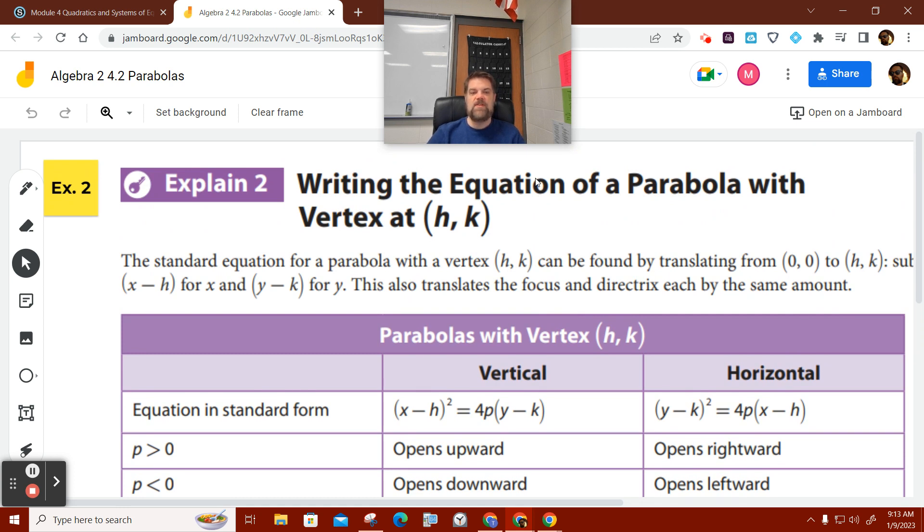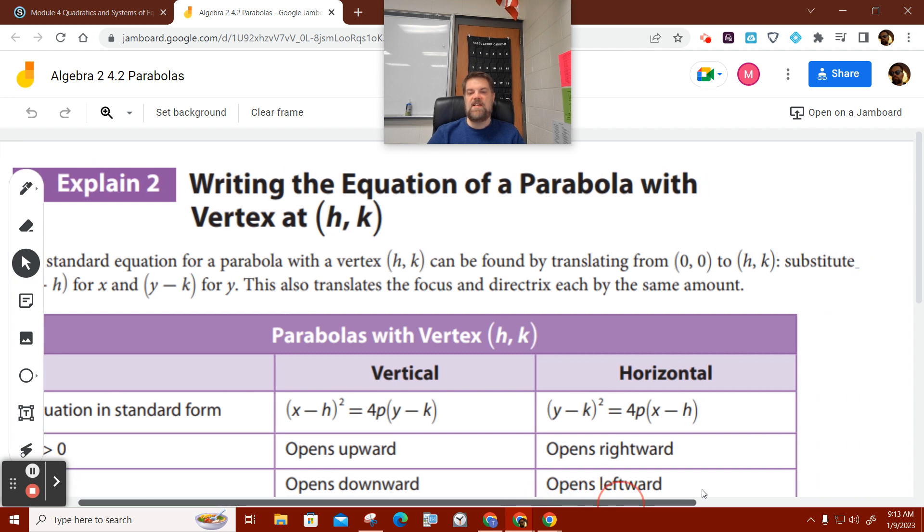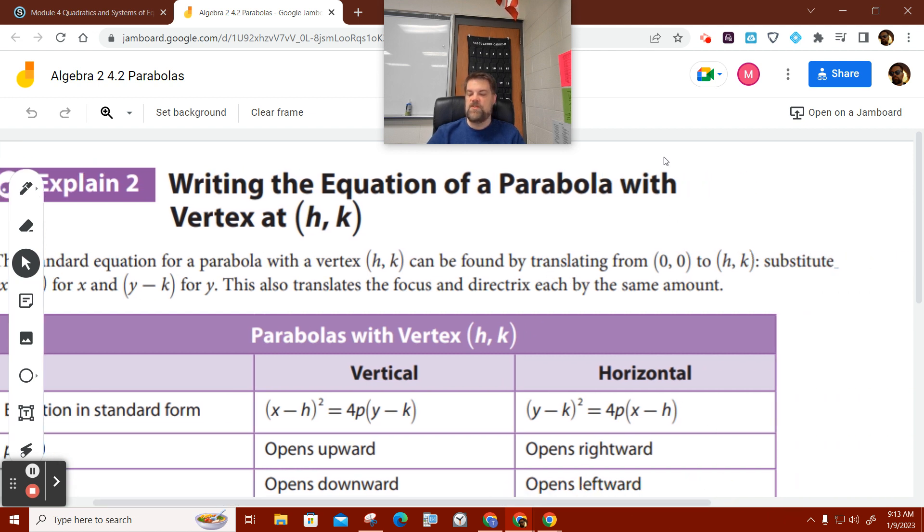Writing the equation of a parabola with a vertex h, k. The standard equation for a parabola with a vertex HK can be found by translating from 0, 0 up to HK. Translating is a fancy word that means move or slide.